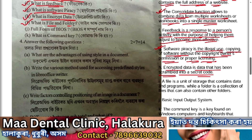What is a file and folder? A file is a unit of storage that contains data and programs, while a folder is a collection of files and can also contain other folders.